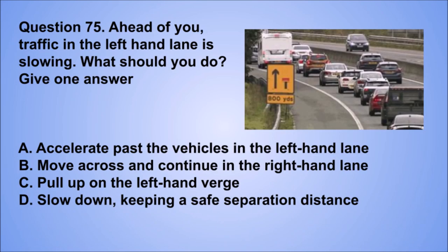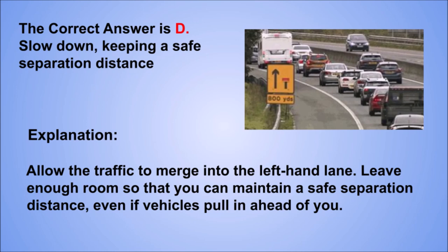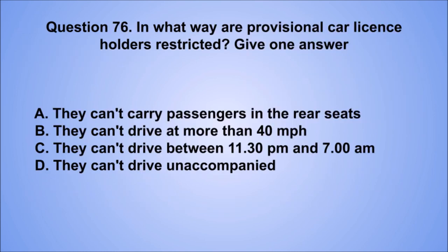Question 75. Ahead of you, traffic in the left-hand lane is slowing. What should you do? Give one answer. A. Accelerate past the vehicles in the left-hand lane. B. Move across and continue in the right-hand lane. C. Pull up on the left-hand verge. D. Slow down, keeping a safe separation distance. The correct answer is D, slow down, keeping a safe separation distance. Allow the traffic to merge into the left-hand lane. Leave enough room so that you can maintain a safe separation distance, even if vehicles pull in ahead of you.